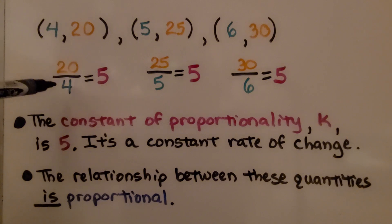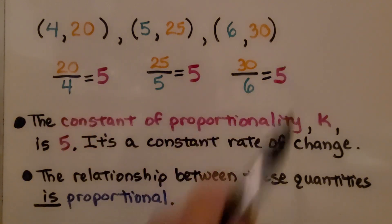This is in the form of y divided by x equals k. The constant of proportionality k is 5. It's a constant rate of change because they're all equal to 5. The relationship between these quantities is proportional.